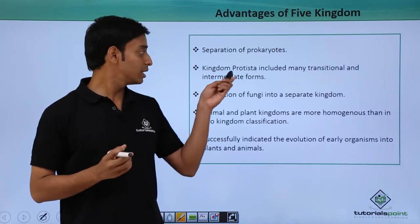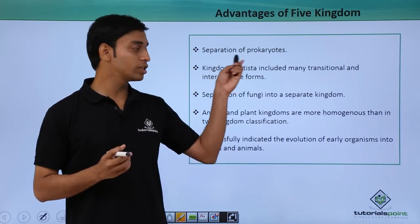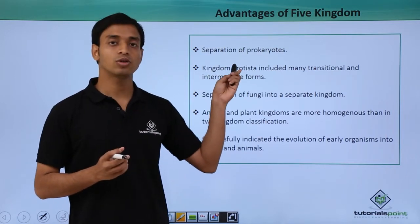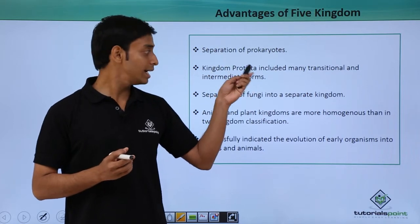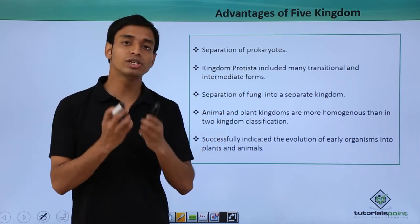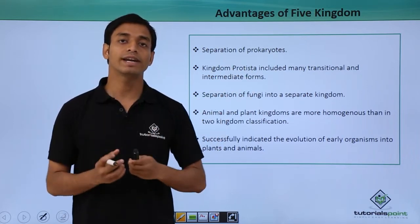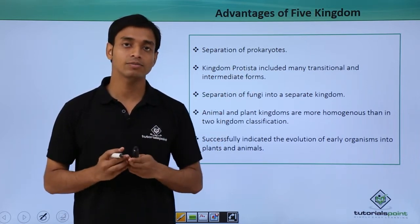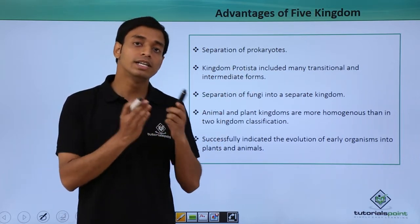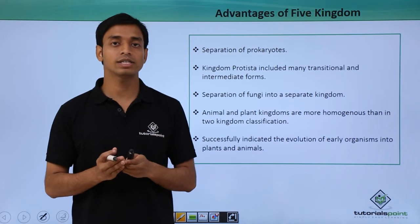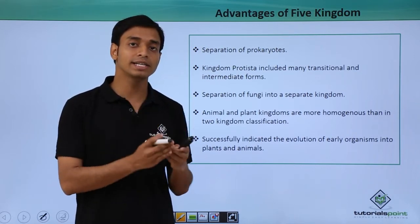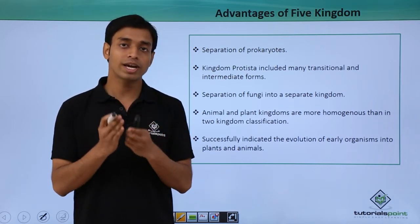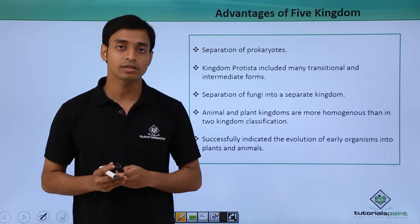So the separation of this Protista group was very important because it includes the unicellular eukaryotic organisms, which have different characteristics compared to those of the multicellular eukaryotic organisms.